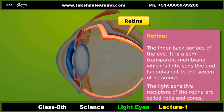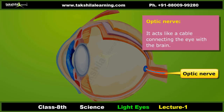Retina: The retina is a light-sensitive tissue that lines the back of the eye. It is a semi-transparent membrane equivalent to the screen of a camera. The eye lens forms an inverted real image of the object on the retina. The light-sensitive receptors of the retina are called rods and cones.